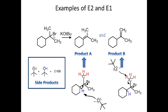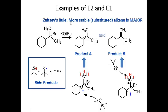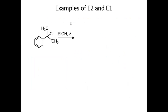Looking at the two products, this is a good place to introduce Zaitsev's rule. Zaitsev's rule states that in an elimination, the major product is going to be the most substituted double bond. Stability increases as you increase the number of substituents on the double bond. This particular double bond is tetra-substituted — it has four carbon substituents — while this one is di-substituted with two carbon substituents and two hydrogens. The more stable, more substituted alkene predominates as the major product.